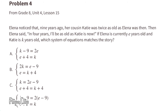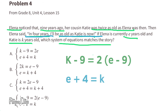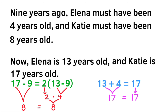Problem 4, from 8th grade Unit 4 Lesson 15: Elena noticed that 9 years ago her cousin Katie was twice as old as Elena was then. Elena also said that in 4 years she'll be as old as Katie is now. With Elena's current age as E and Katie's as K, the answer is D: K minus 9 equals 2 times (E minus 9), and E plus 4 equals K. This means 9 years ago Elena was 4 and Katie was 8; now Elena is 13 and Katie is 17.